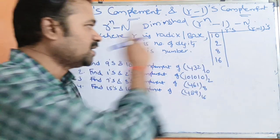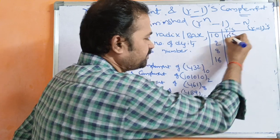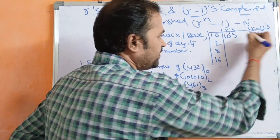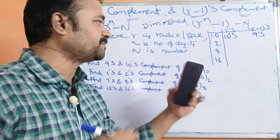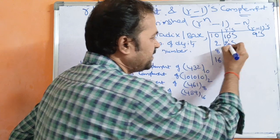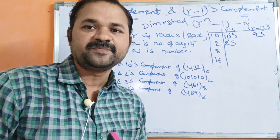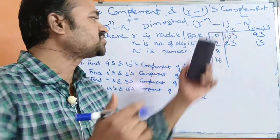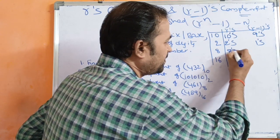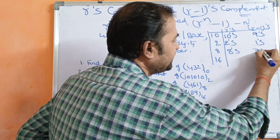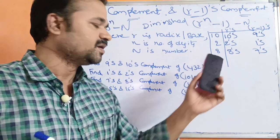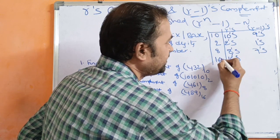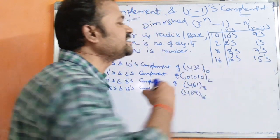For the decimal number system, R's complement means 10's complement, and R-1's complement means 9's complement. For binary, R's complement is 2's complement and R-1's complement is 1's complement. For octal, R's complement is 8's complement and R-1's complement is 7's complement. For hexadecimal, R's complement is 16's complement and R-1's complement is 15's complement.